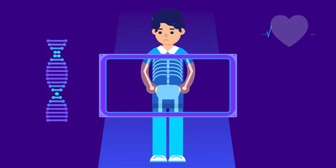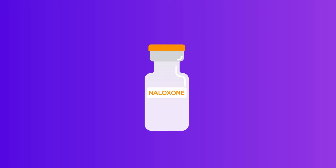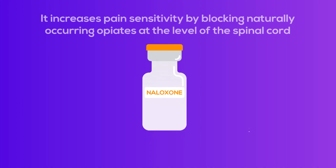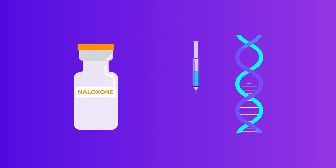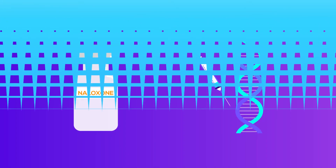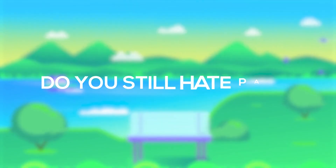Though we are far away from finding a definitive cure for this disease, we have found some success with naloxone, an opiate antagonist. It increases pain sensitivity by blocking naturally occurring opiates at the level of the spinal cord. I'm hopeful that we will find a definitive cure in the future with the help of gene therapy.